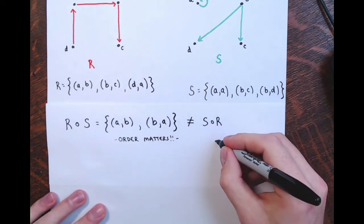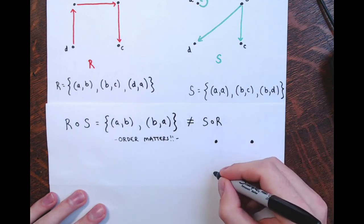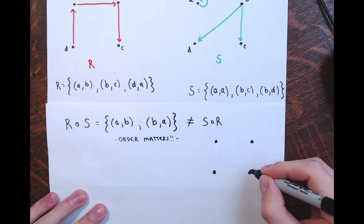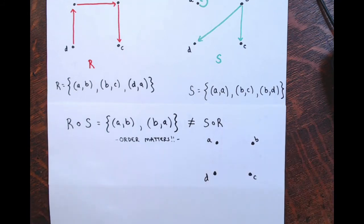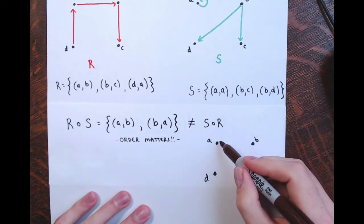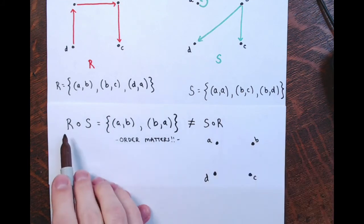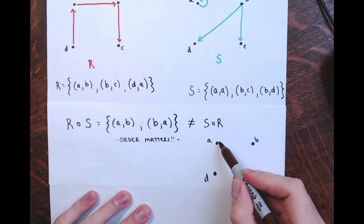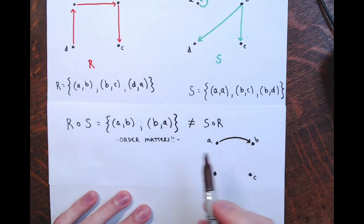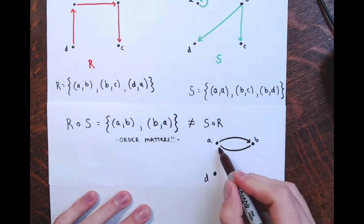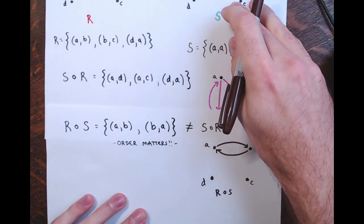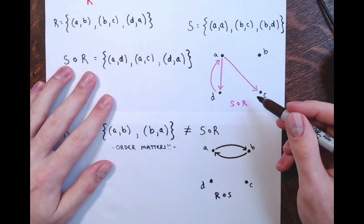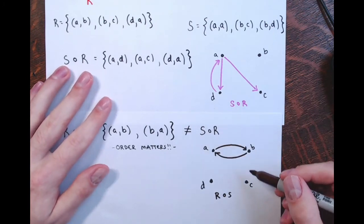Here's the directed graph for R∘S — a very simple one with only two ordered pairs on elements A, B, C, D: A maps to B and B maps to A. You can tell they're different — S∘R had that other digraph, and R∘S has this one: a totally different picture.